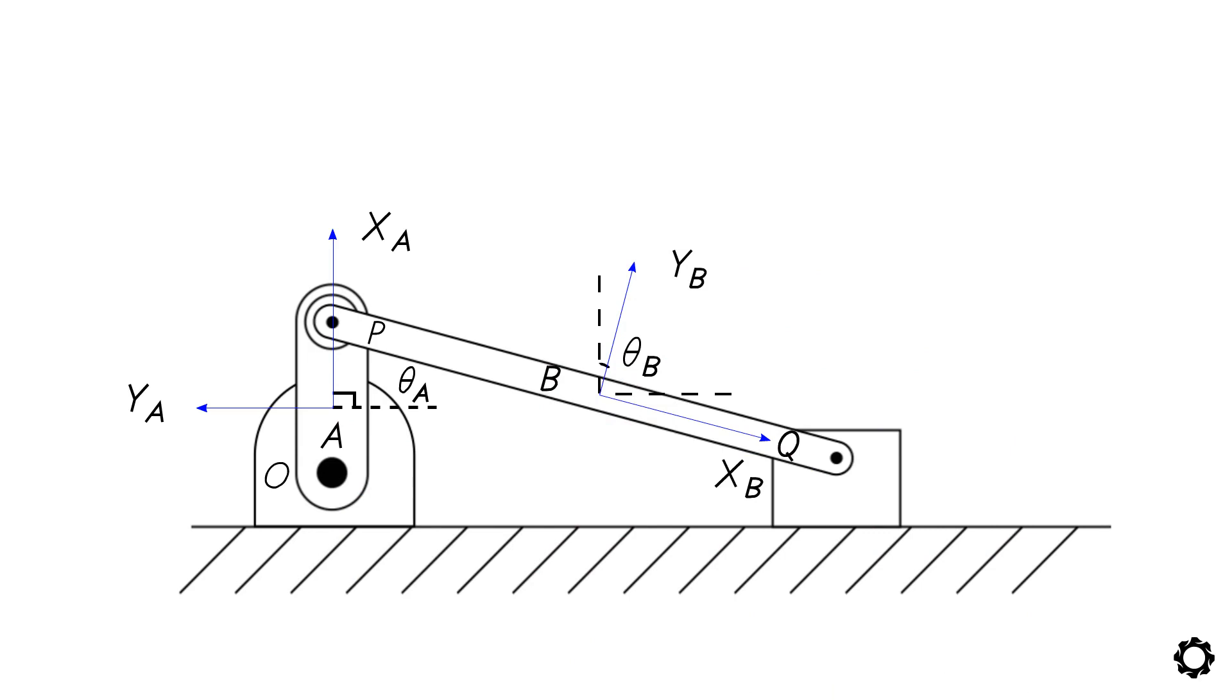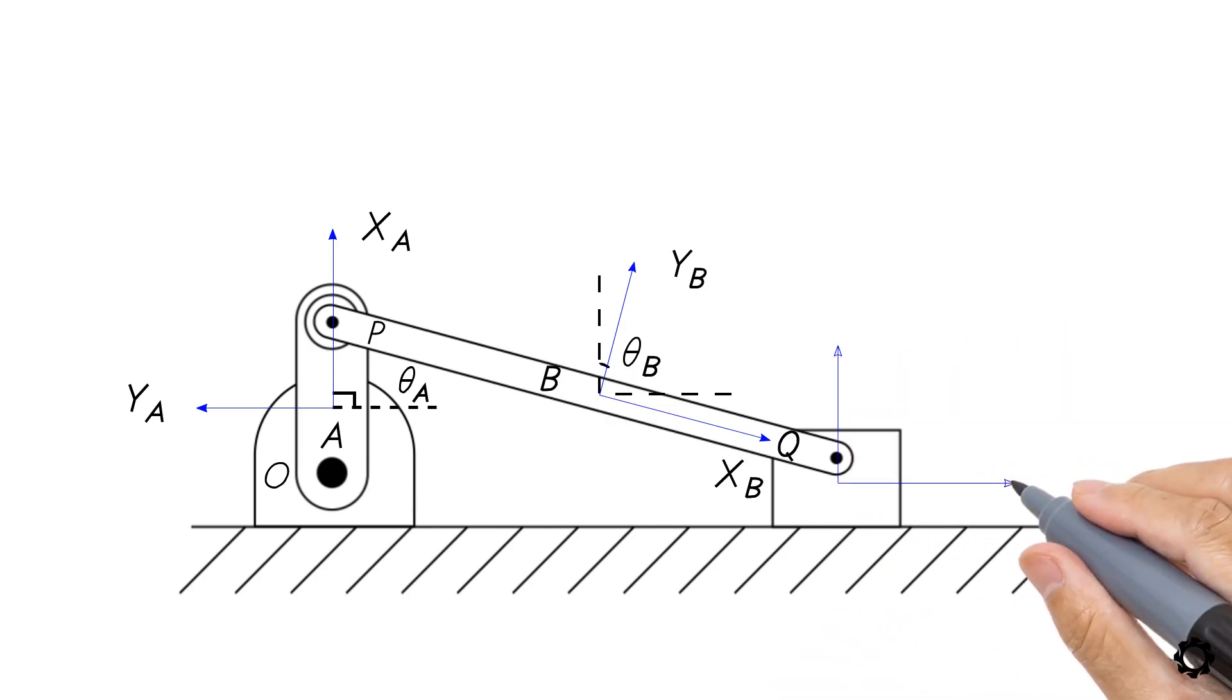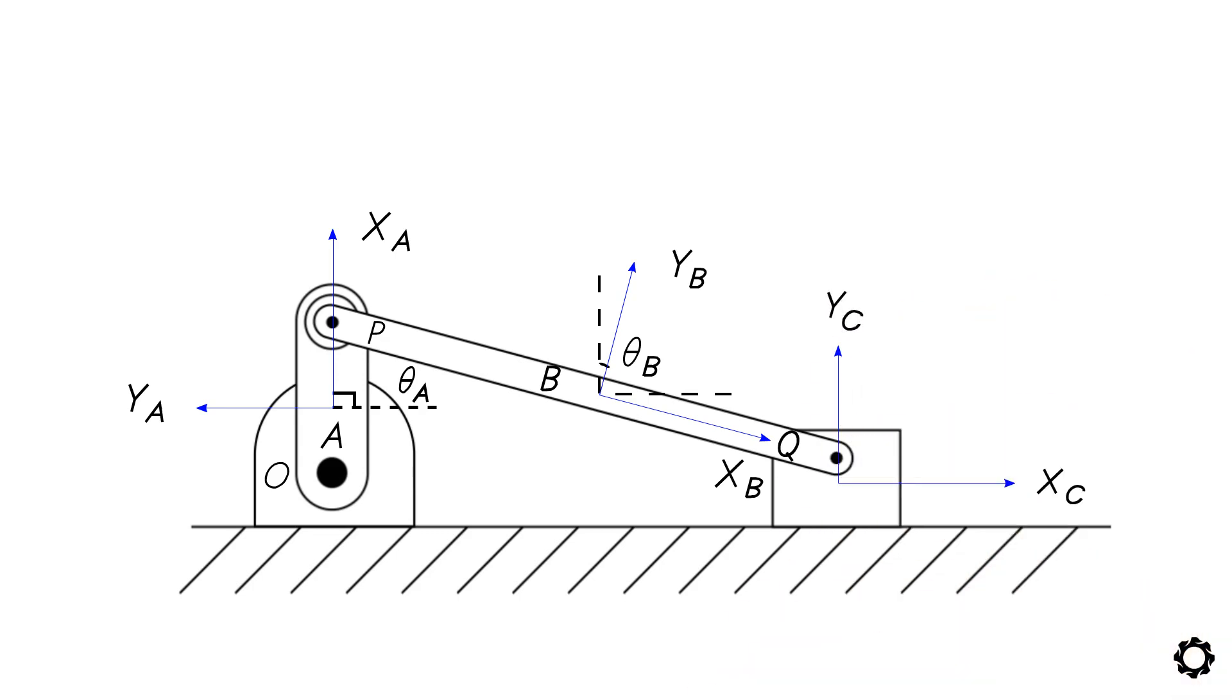And for the case of the block, we will add a body reference system at the center of it with the x-axis oriented horizontally. The block will be our body C.